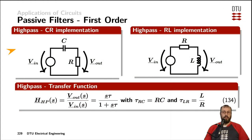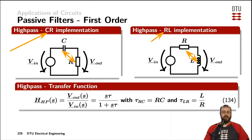A first-order high-pass can also use either a capacitor and a resistor, or a resistor and an inductor. Compared to the low-pass, the components are switched around: the capacitor is in series first and then the resistor, or the resistor first and then the inductor in parallel with the output. These circuits yield a transfer function with a single zero at frequency zero and a pole located by the same time constant tau — RC for the RC implementation, or inductance divided by resistance for the RL circuit.